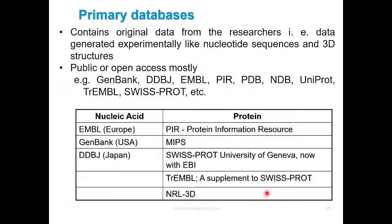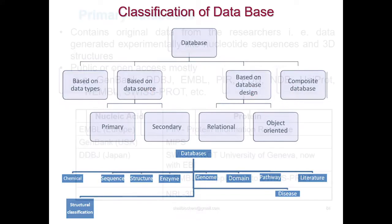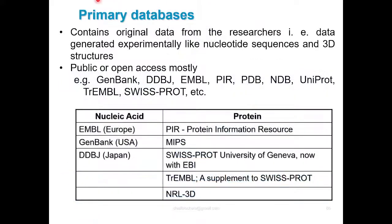On the basis of their function, we divide the databases. As you can see, there are primary, secondary, relational, object-oriented and composite databases. Primary databases contain original data from the researcher.